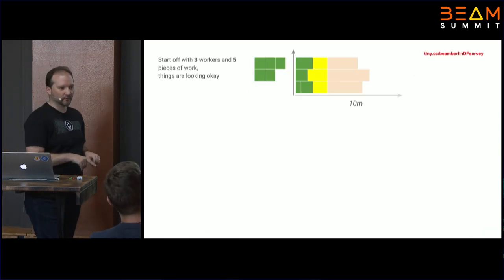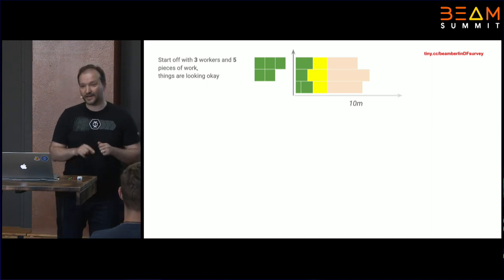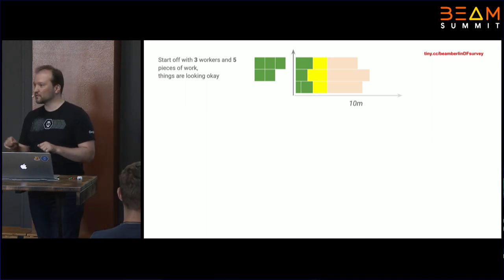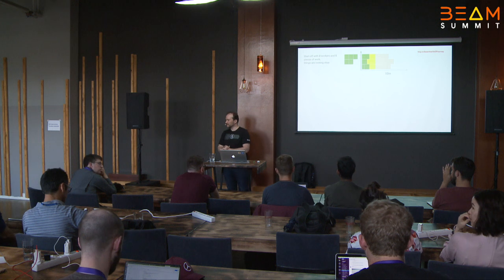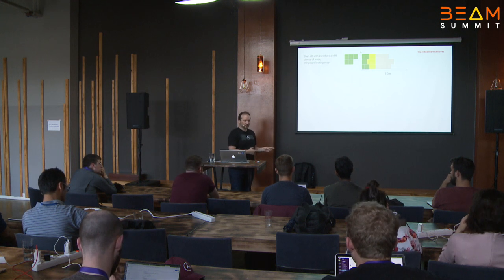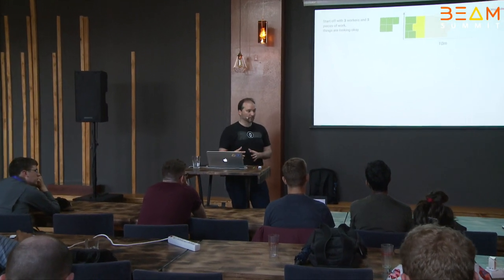This is important for another feature of Dataflow: autoscaling. Without dynamic work rebalancing in batch mode, autoscaling would not be as efficient. For example, let's say we start a pipeline with three workers and we know we have five input shards. The green boxes are the input shards, and we have three swim lanes — three workers doing work.